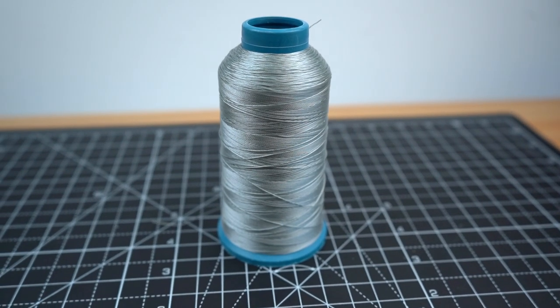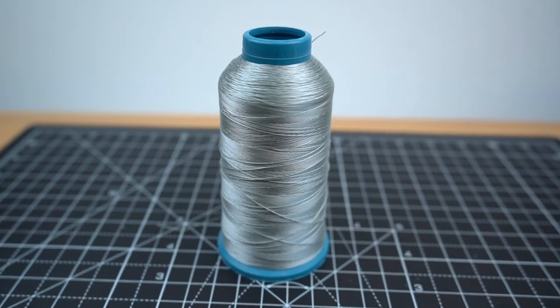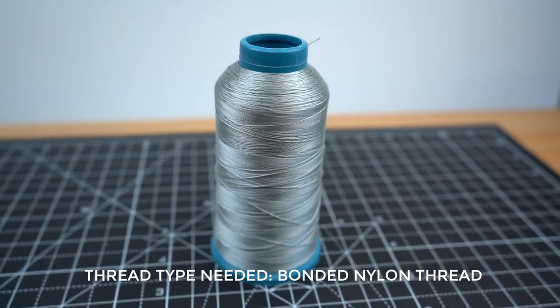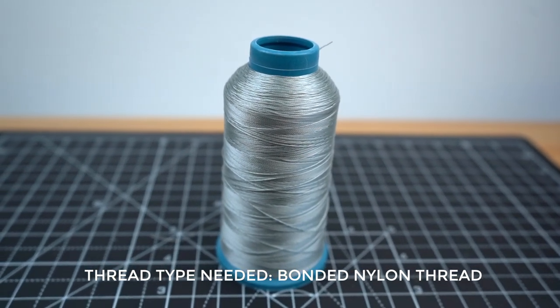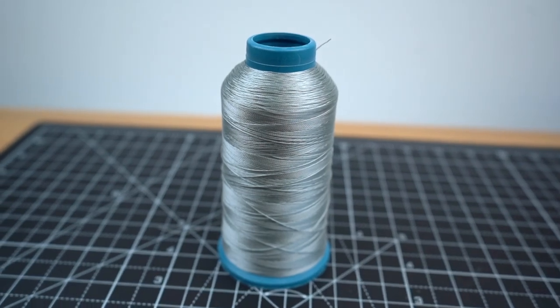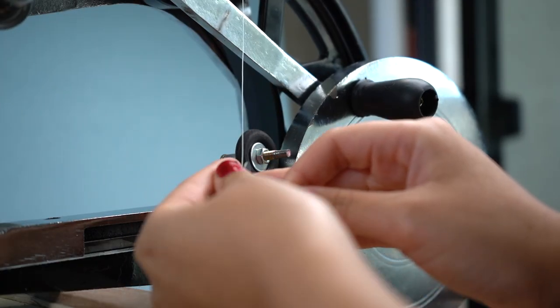Alright let's talk about the sewing portion. One really important factor to getting clean looking stitches is to have the thread match the color of your print as closely as possible. My print is mainly gray so I picked up some gray bonded nylon thread.